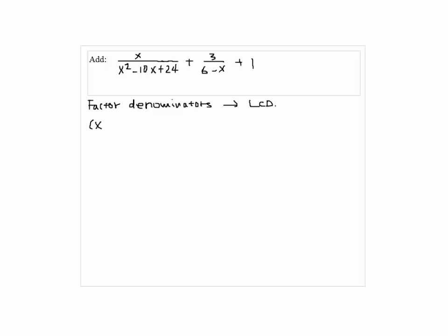So first we have x squared minus 10x plus 24, which is factored as x minus 4 times x minus 6. And the second one, 6 minus x, could be factored as negative x minus 6, where I factored out negative 1.